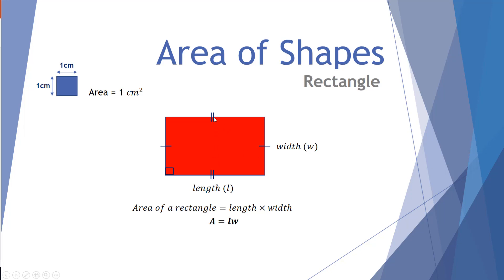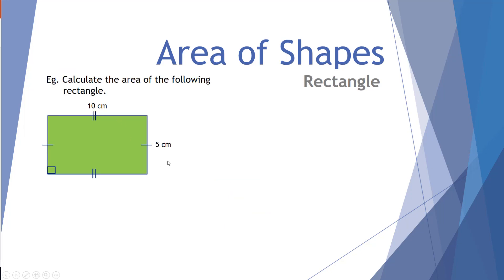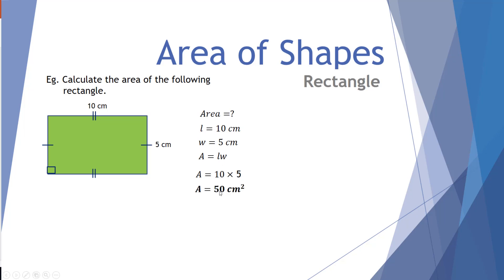The double dash markings mean those two side lengths are equal, and single dashes mean those two are equal as well, which is what you expect for a rectangle. Quick example: a 10 by 5 rectangle. Area equals length times width. We put our calculations vertically underneath each other, not left to right. The length is 10, the width is 5. A equals LW, so 10 times 5 gives 50. The area is 50 centimeters squared.